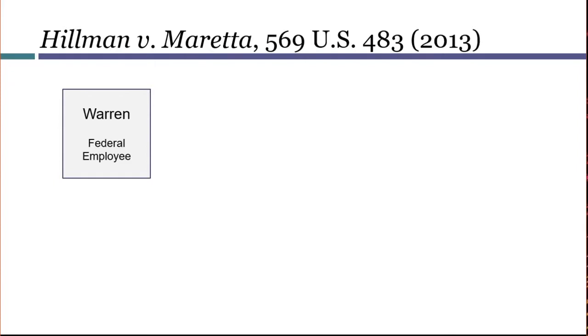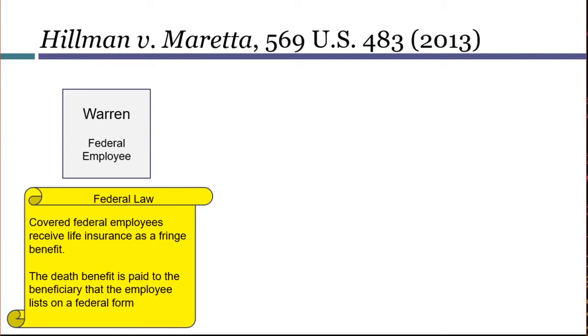With that introduction out of the way, let's now consider when a state law will, in fact, be preempted. We can use as our example Hillman v. Maretta, which is a U.S. Supreme Court case from 2013. Our story begins with Warren, who has a job with a federal agency. Under a federal statute first passed in the 1950s, Warren gets life insurance as a fringe benefit of his employment. The statute specifies that the death benefit should be paid to the person the employee designates as the beneficiary on a federal form. You might want to pause the video and figure out which enumerated power or powers Congress would have relied on to pass this law.